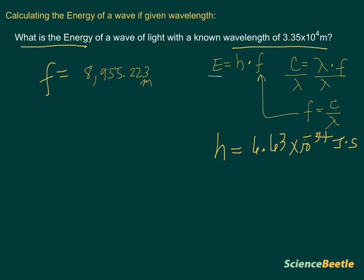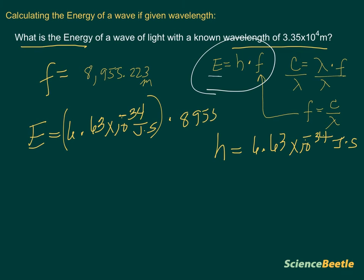The equation again is going to be E equals H times F. So the energy for this particular wave is going to equal Planck's constant, which is 6.63 times 10 to the negative 34 joules seconds. And we're going to multiply this times the number that we got up top, and that number is going to be 8,955.223. So let's go ahead and multiply these numbers.